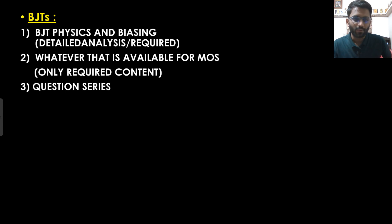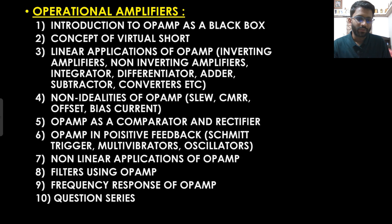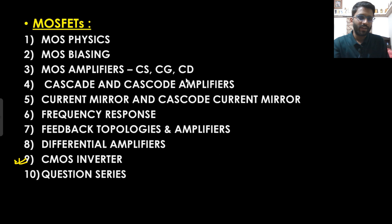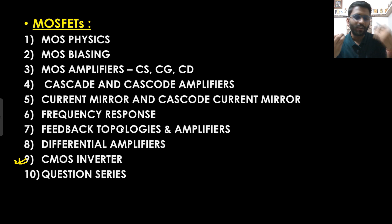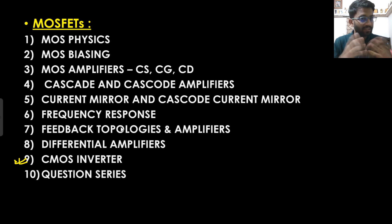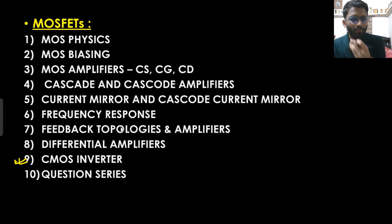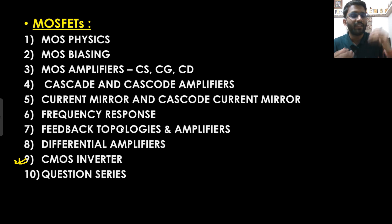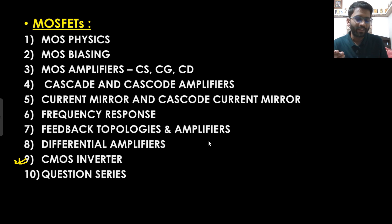Whatever we cover in MOSFET — common source, common gate, all kinds of amplifiers — we will cover for BJT as well, but it will be common emitter, common base, common collector. We will cover those but not in very much depth, because previous year questions — last 10 years — show BJT questions are only about biasing. MOSFET amplifier questions are asked a lot. Once you are comfortable with MOS amplifiers, BJT will be a cakewalk. In MOSFET we will take around 30 to 35 hours.